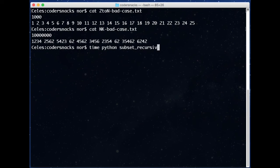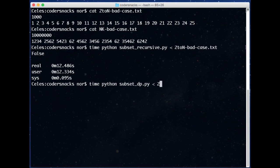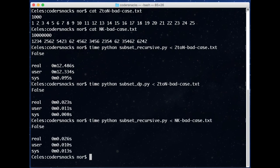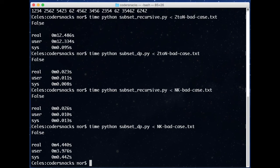When we run the recursive solution on the case with 25 numbers, it takes about 12 seconds to run, which we've sped up here. With the DP solution, it returns very quickly. On the other hand, when we run the recursive solution on the case with 10 numbers but a high target, it returns very quickly, but the DP solution takes several seconds.